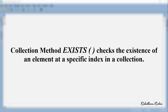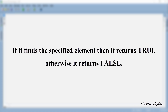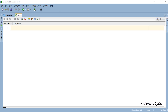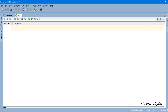Collection method EXISTS checks the existence of an element at a specific index in a collection. If it finds the specified element then it returns true, otherwise it returns false. Let's do an example to understand the concept.